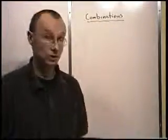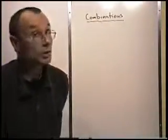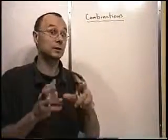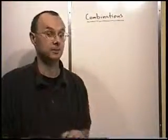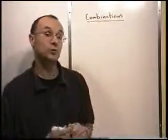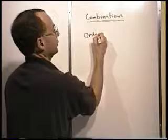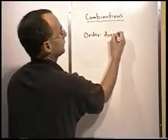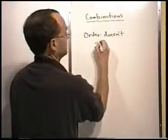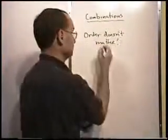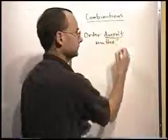Today we're going to look at combinations. Last time we looked at permutations, and with permutations it was very important that order mattered. The big difference now is with combinations, order doesn't matter. That is the major difference between the two of them.